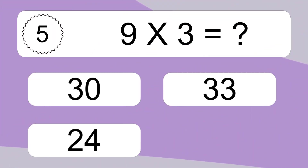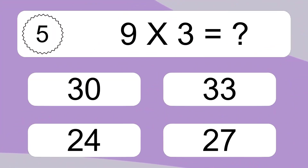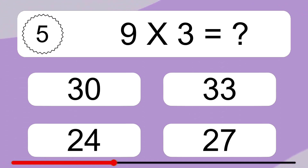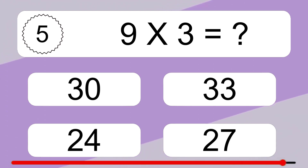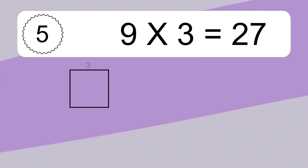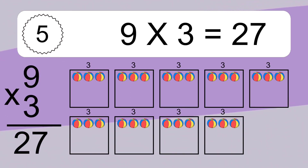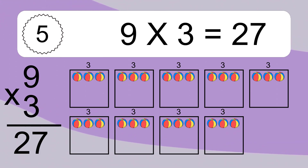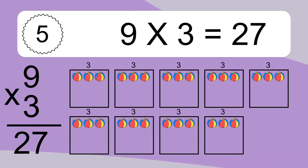9 times 3 equals what? 9 times 3 equals 27. We have 9 boxes, and each box has 3 colorful balls inside. If you count all the balls in all the boxes together, you will have 9 times 3 balls. This equals 27 balls.